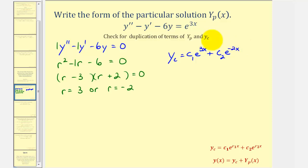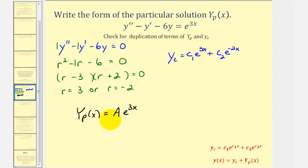Now considering the form of the particular solution, we might think y_p(x) = Ae^(3x), but this term is already in the complementary function as c₁e^(3x). So we add an extra factor of the independent variable x, giving the correct form: y_p(x) = Axe^(3x). Whenever we have repetition in terms, we must add an extra factor of the independent variable.